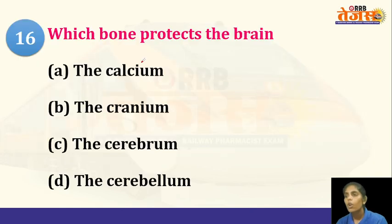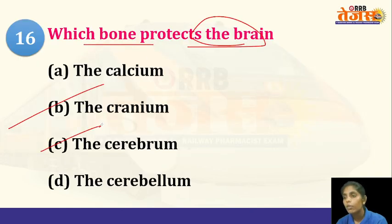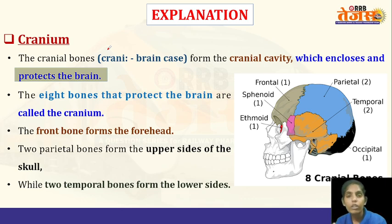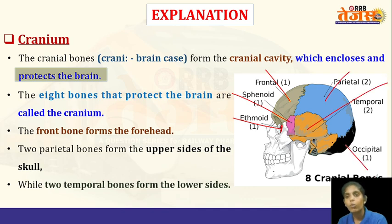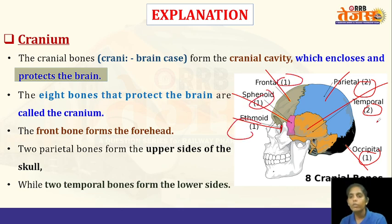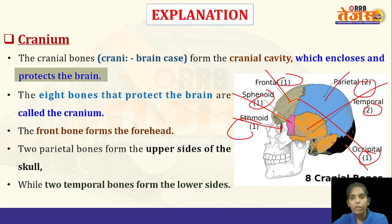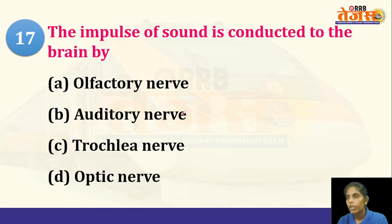Next question: which bone protects the brain — cranium, cerebellum, cerebrum, or calcium? The answer is the cranium. The cranium of the skull protects the brain and contains different bones: frontal bone, sphenoid bone, ethmoid bone, parietal bone, temporal bone, and occipital bone. There are 8 cranial bones total. The sphenoid and ethmoid bones are part of the facial bones, while the frontal, parietal, temporal, and occipital bones are the skull or cranial bones.